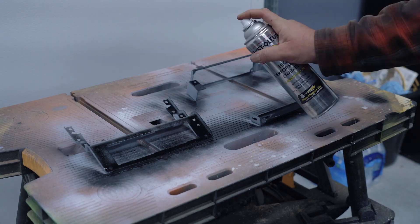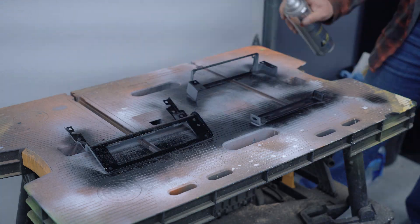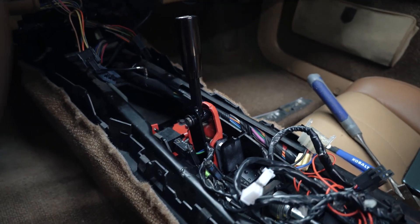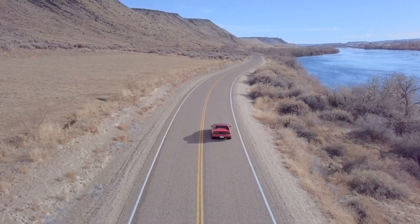So I finished up the whole process by priming and painting everything to prevent future rust. This is the completed assembly in the car. Time to go do some driving.